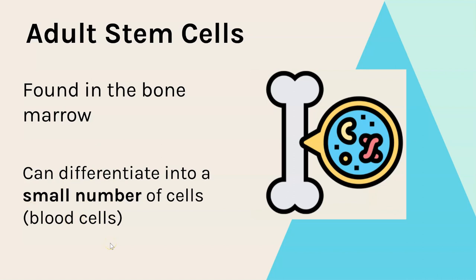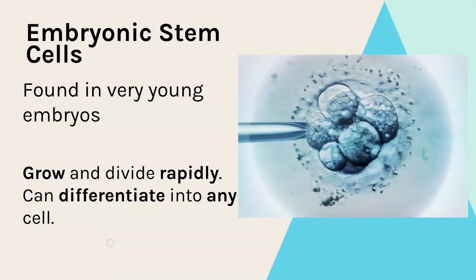In contrast, adults do have stem cells but they are found in limited places such as the bone marrow. These bone marrow stem cells can differentiate into different cells but only a small number of different types - specifically blood cells. In humans and other animals, the most useful stem cells are embryonic stem cells, found in very young embryos shortly after the sperm and egg fertilize. Those stem cells have the ability to grow and divide rapidly into any type of cell.